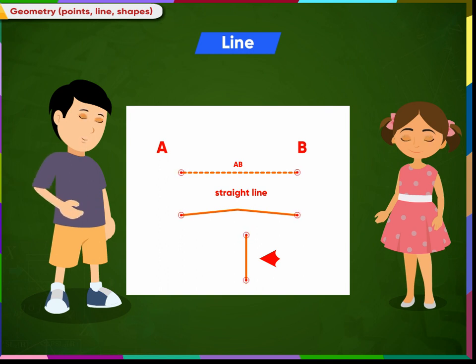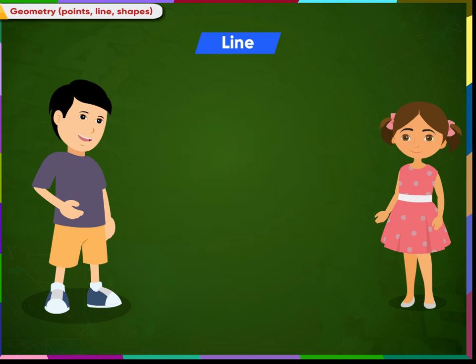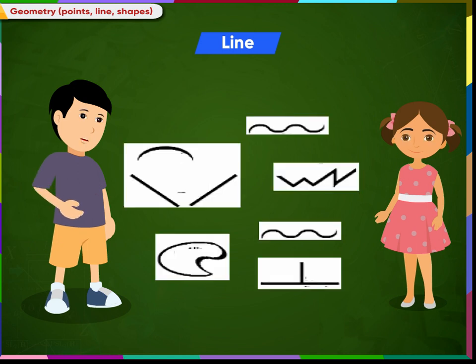All these lines are drawn by joining two points. These lines are called as slanting lines. This line is called as vertical lines. And we know that this line is called as sleeping lines. Let me give a few more examples of lines. These are all lines.